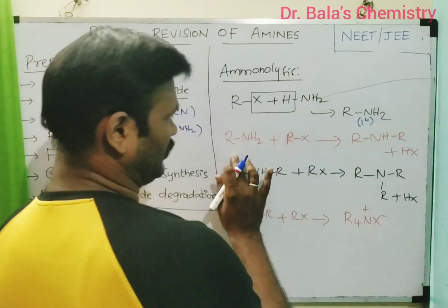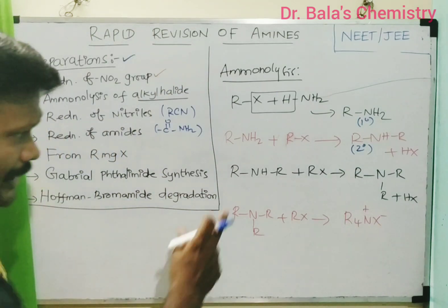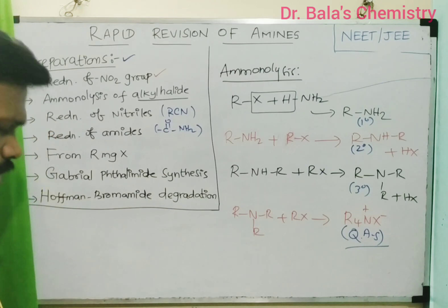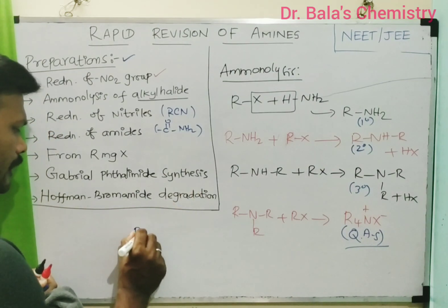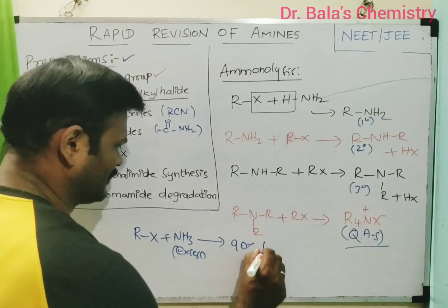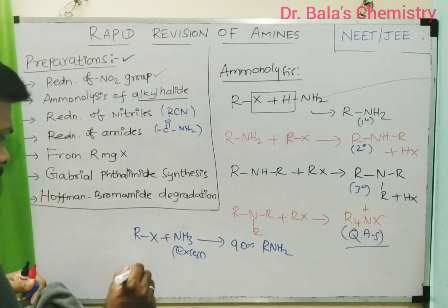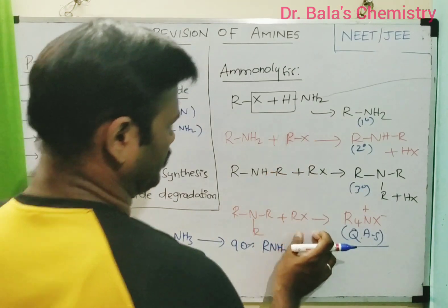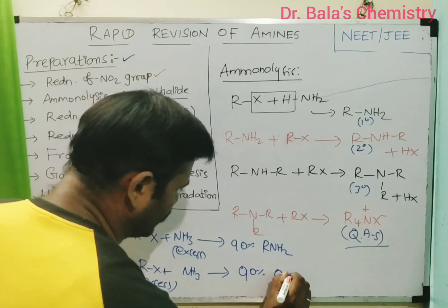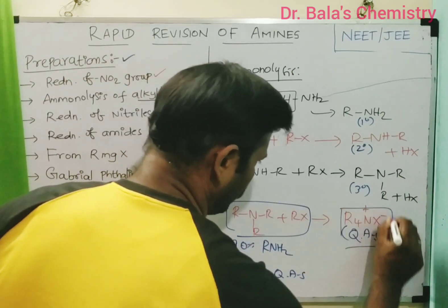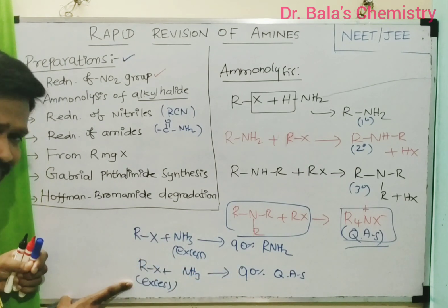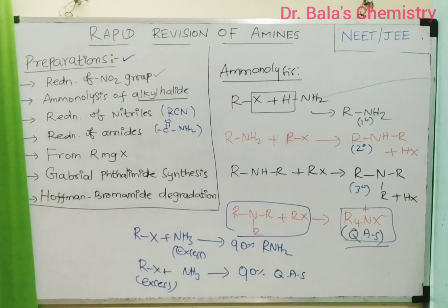In ammoniolysis: 1° amine reacts further with RX to form 2° amine; 2° amine reacts with RX to form 3° amine; 3° amine reacts again with RX to form quaternary ammonium salt. The key point is: if ammonia is taken in excess, the reaction stops mainly at the primary amine stage — about 90% of product is primary amine. If RX is in excess, you get quaternary ammonium salt predominantly. This is a very important concept in ammoniolysis.